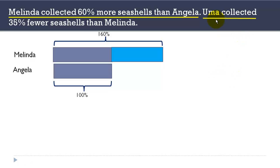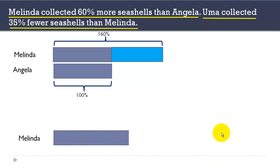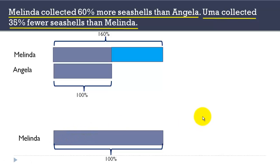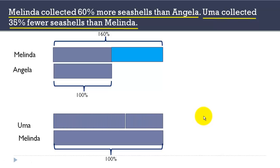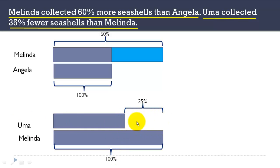Now, Uma collected 35% fewer seashells than Melinda. This is another comparison between Uma and Melinda. Melinda comes after 'fewer than,' so Melinda is our reference — we consider Melinda's amount as 100%. Uma had 35% fewer, meaning 35% is not with Uma. So Uma has 100% minus 35%, which gives us 65%.